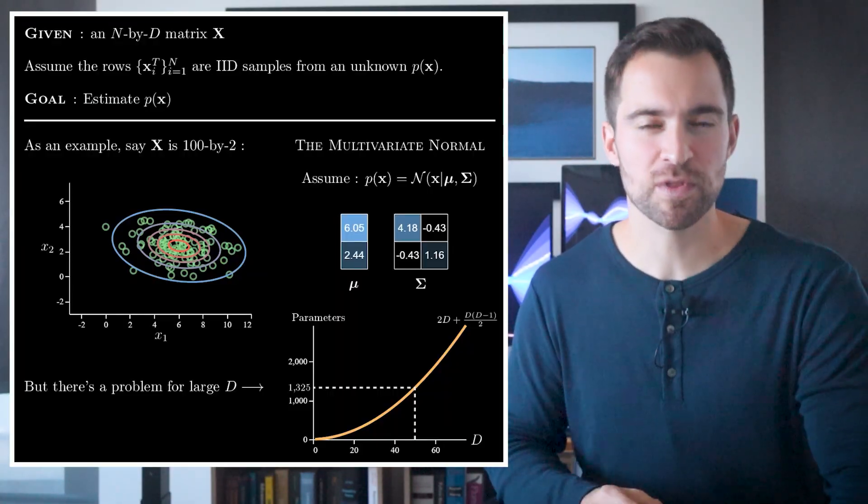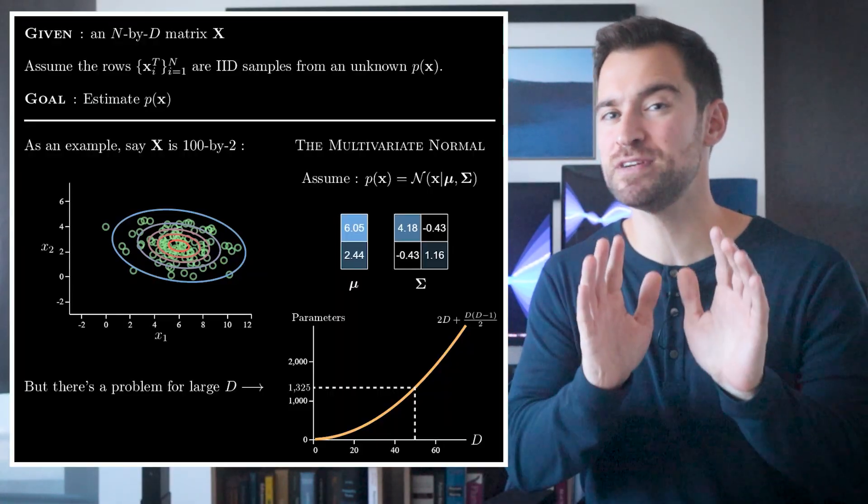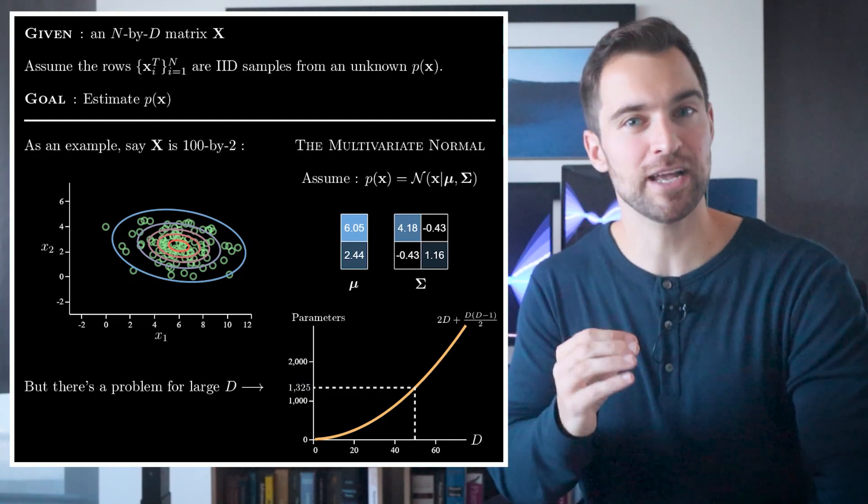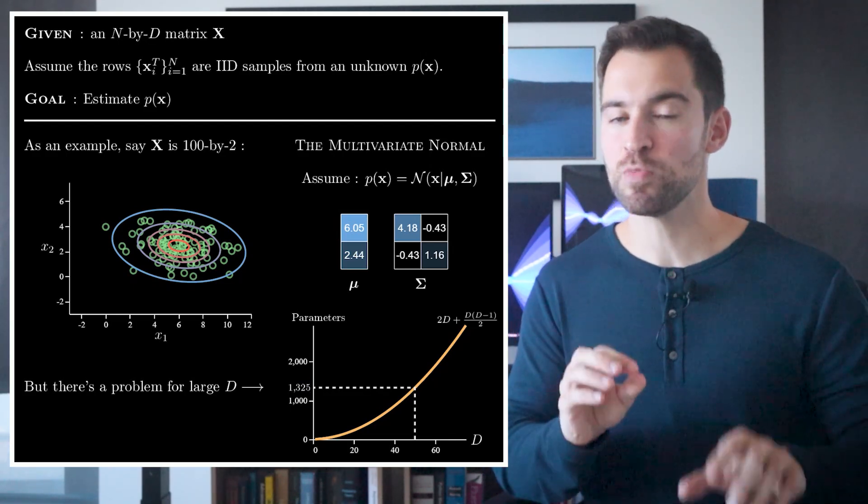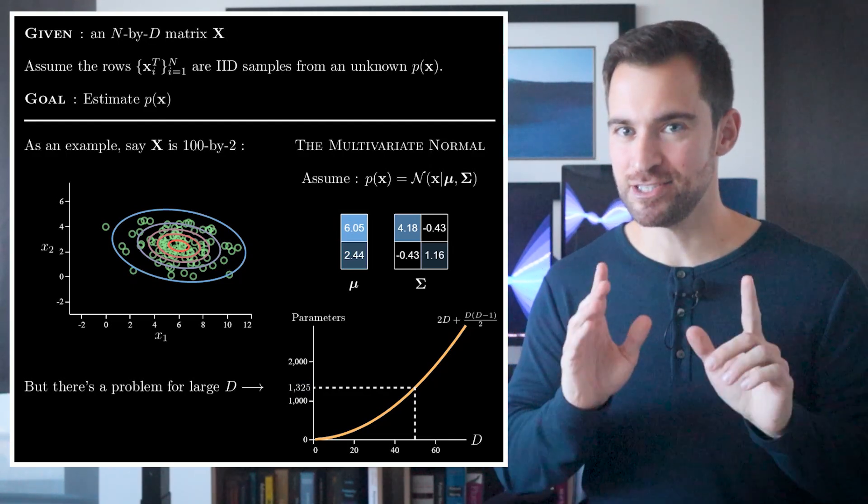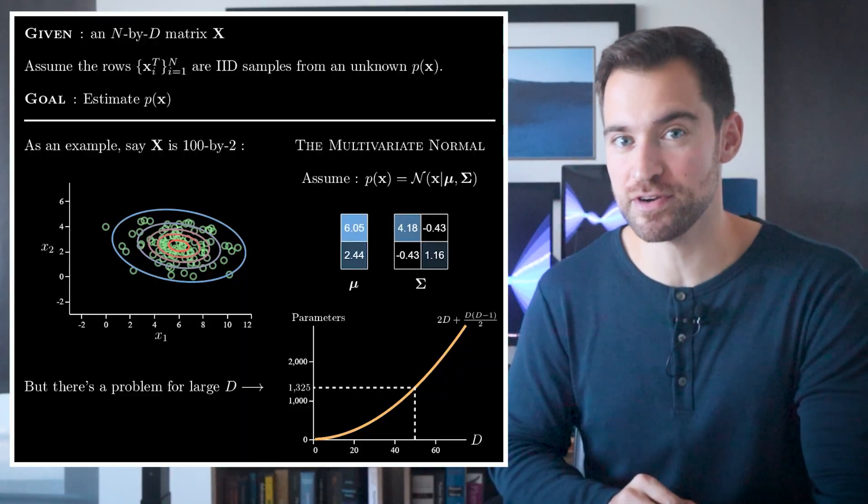Estimating a model like that would require a ton of data. So the challenge is, we'd like to learn a distribution over this potentially high dimensional space, like when D is equal to 50, but with much less data. To do that, we'll need a model with fewer parameters. And that's where factor analysis comes in.